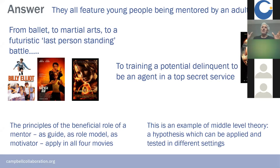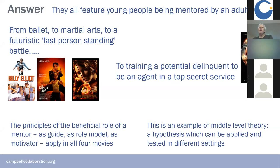The basic idea of middle-range theory is a common core causal principle that applies across different settings. This idea of a mentor features very commonly in fiction — films and books — but also in real life. People who have turned their lives around from disadvantaged backgrounds nearly always mention some key adult who was a supporter: a grandparent, a priest, an athletics coach — someone who played a key role in their transformation. That's the basic idea behind mentoring programs.